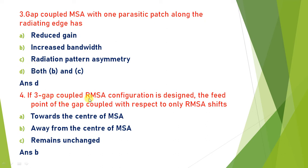A three gap coupled RMSA configuration is designed. The feed point of the gap coupled with respect to only RMSA shifts away from the center of the MSP. This is a straightforward theoretical answer: for a three gap coupled RMSA configuration the feed point shifts away from the center. So the answer is B.